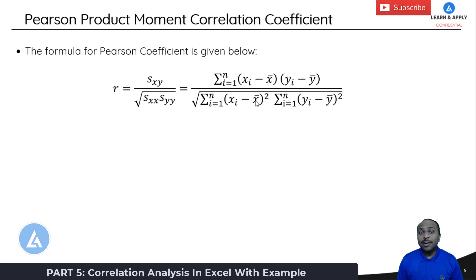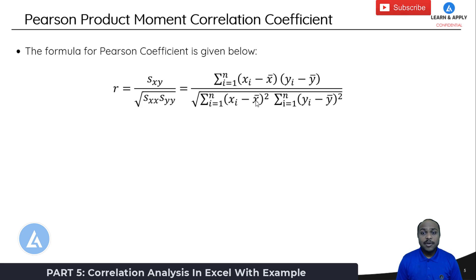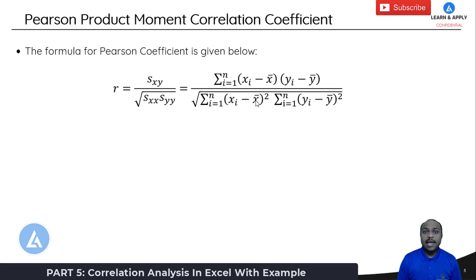The full formula is: R equals the summation from i=1 to n of (xi minus x-bar)(yi minus y-bar), divided by the square root of the summation from i=1 to n of (xi minus x-bar)² times the summation from i=1 to n of (yi minus y-bar)². Depending on the sign of R, we can see whether there is a positive or negative correlation between the variables.